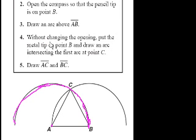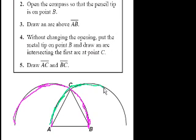Fair enough. Without changing the opening, put the metal tip on point B and draw an arc intersecting the first arc at point C. So now they draw that second arc in another color. Now draw AC and BC.